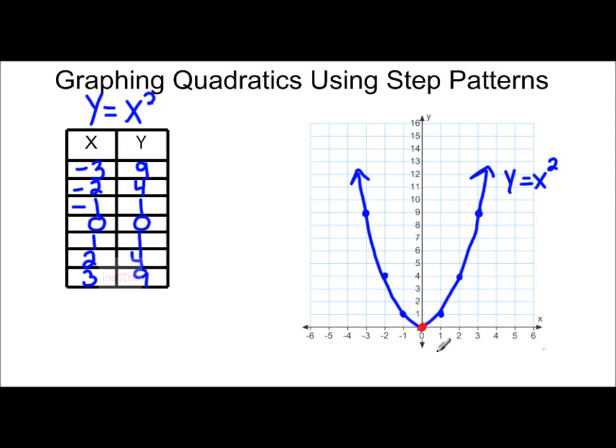I'm going to start at the vertex, which in this case is 0, 0. And I'm going to go over 1 and count how many I have to go up. So in this case, I'm going over 1, up 1. And if I start from there, I'm going over 1, up 1, 2, 3. So over 1, up 3. If I go over 1 again, I'm going up 1, 2, 3, 4, 5.